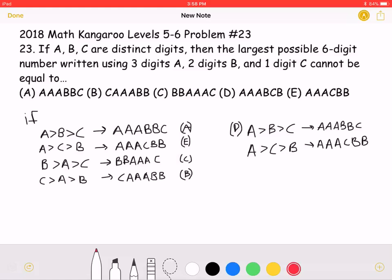This is the 2018 Math Kangaroo Levels 5-6 Problem No. 23. If A, B, C are distinct digits, then the largest possible six-digit number written using three digits A, two digits B, and one digit C cannot be equal to...